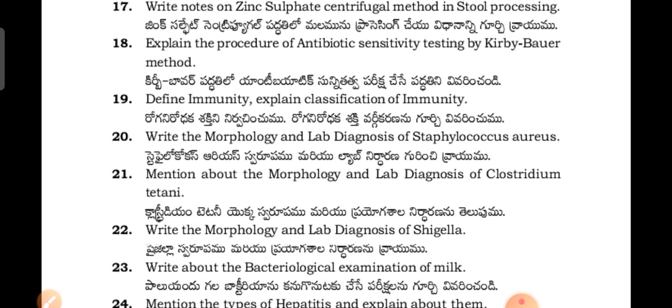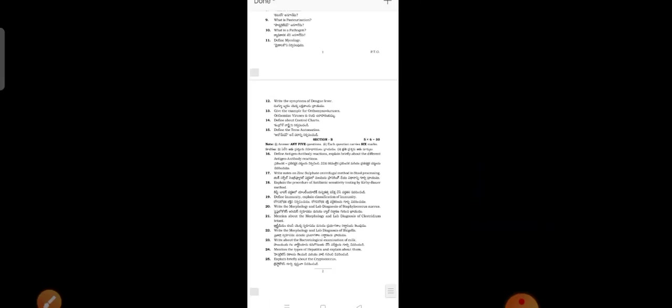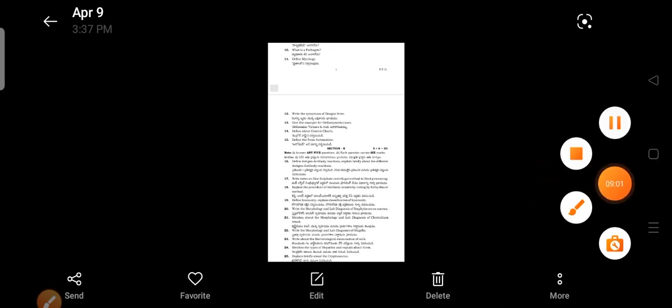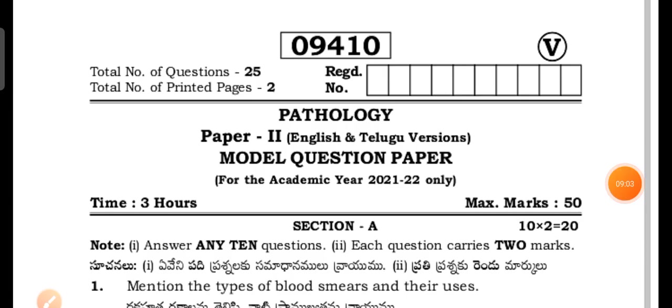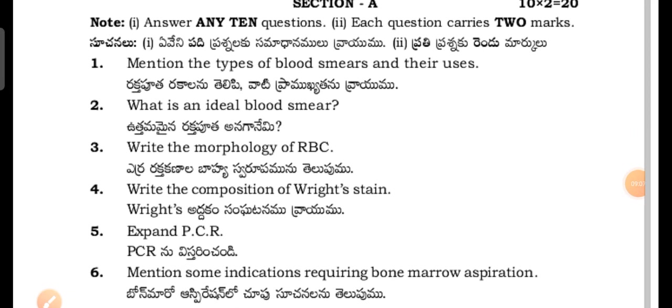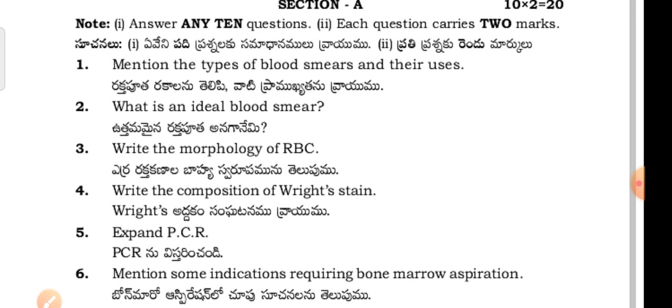I have now discussed and given the model question papers in biochemistry and microbiology for the MLT second year students. Now I am going to show the model question paper for the third paper, which is pathology. Same pattern: Section A 15 questions, attempt any 10; Section B 10 questions, attempt any 5. You have 50-50 choice.